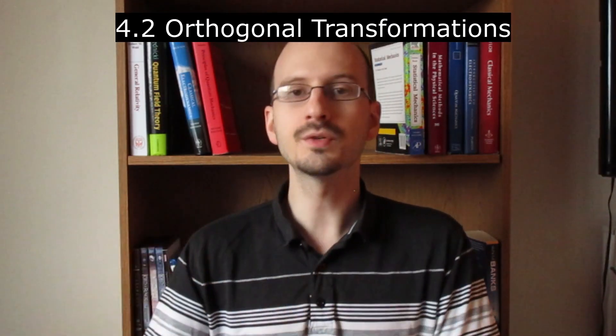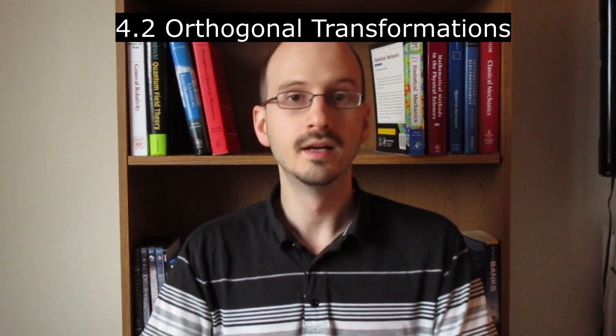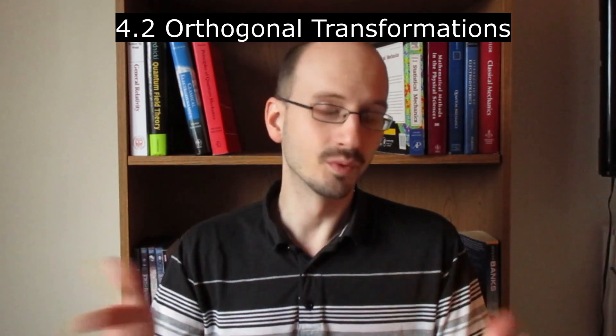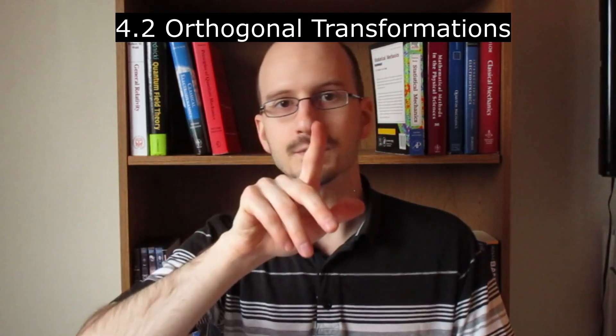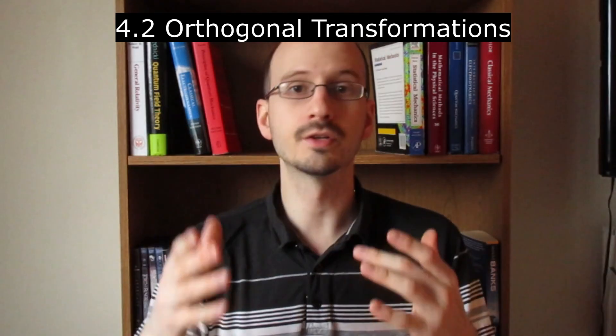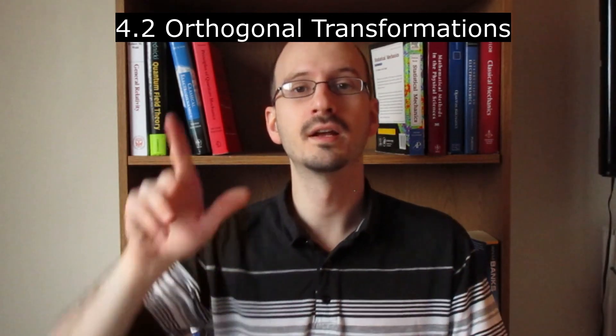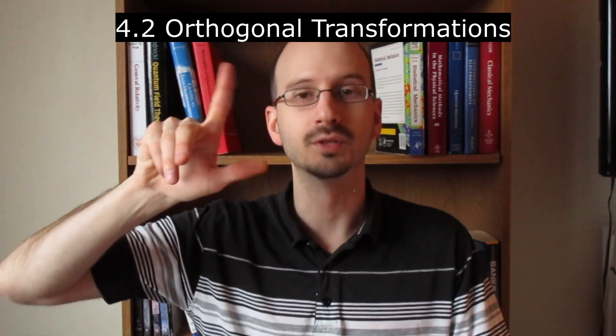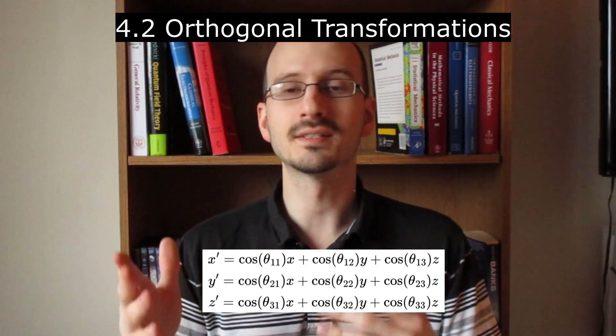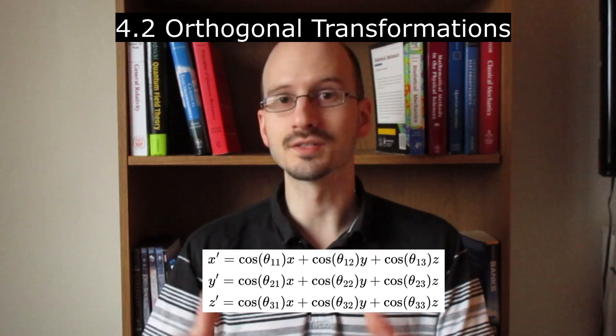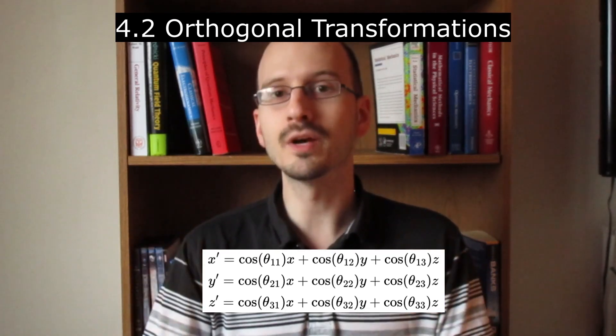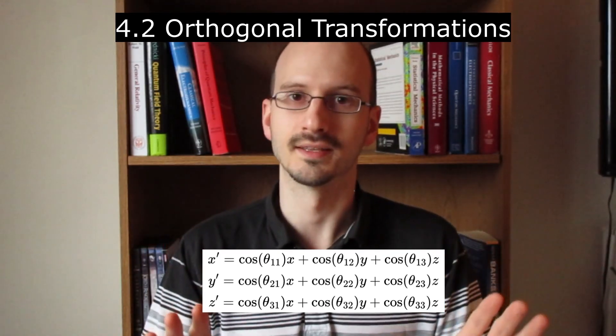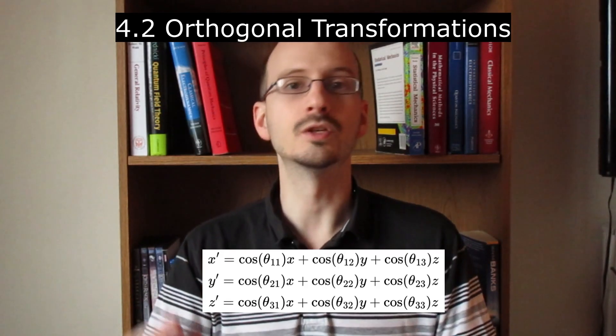Section 4.2 is titled orthogonal transformations. An orthogonal transformation is what we've been talking about. We take a coordinate system, we move it in space, and we rotate it. There is no scaling of the axes. There is no changing of the angle between them. Now the reason I wrote these entire equations out is because there is a much easier way to represent sets of equations that look similar like this. That is to use a matrix.